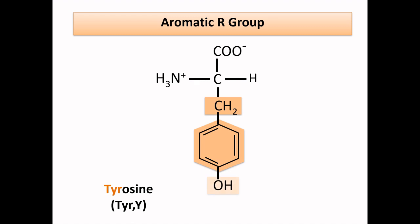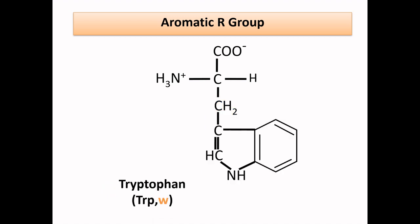Tyrosine has one hydroxyl group attached to the phenyl group. You can simply remember it as: phenylalanine is phenylalanine having one tire, and that tire is OH, or the hydroxyl group. Tryptophan has one indole ring — that is one six-member ring attached to a five-member ring. If you look at this structure you can see a W in it, and W is also the single-letter name for tryptophan, so remember this W-shaped structure as tryptophan.